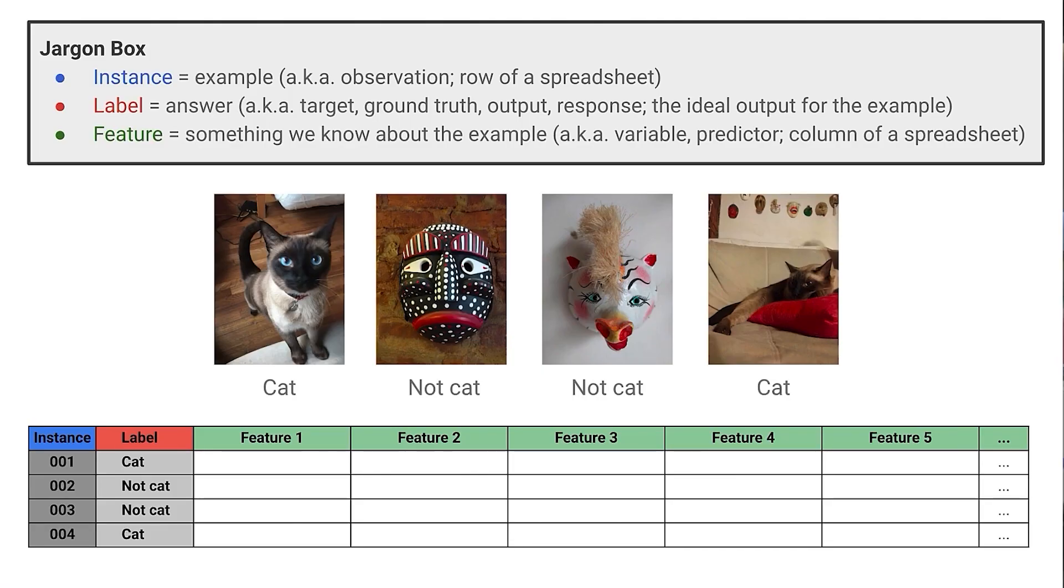Here, a feature is something that we know about our example that we can put into the recipe to learn from. In other disciplines, you might see feature called variable, predictor, or attribute.